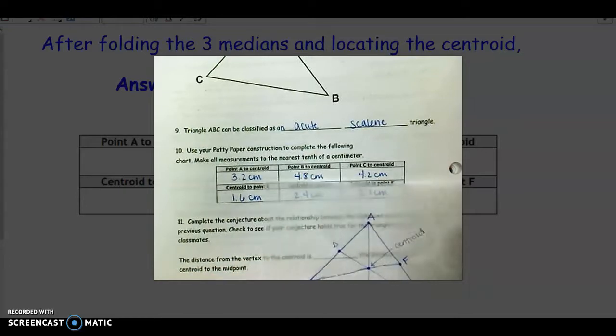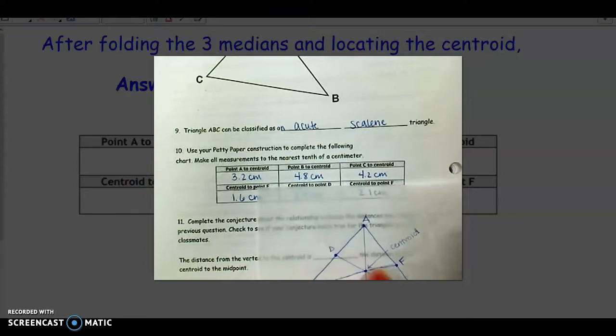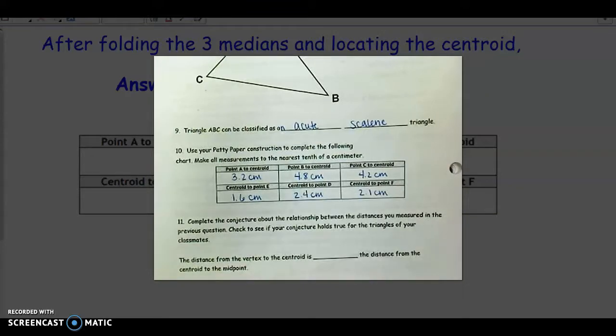When we went from C to the centroid, I got 4.2 centimeters. And centroid to F, I got 2.1 centimeters.